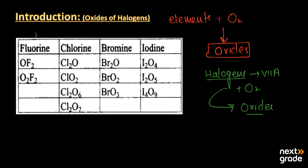The first halogen is fluorine, which can produce two types of oxides: OF2 and O2F2. The second is chlorine, which produces four types of oxides: Cl2O, ClO2, Cl2O6, and Cl2O7, which is dichlorine heptoxide.